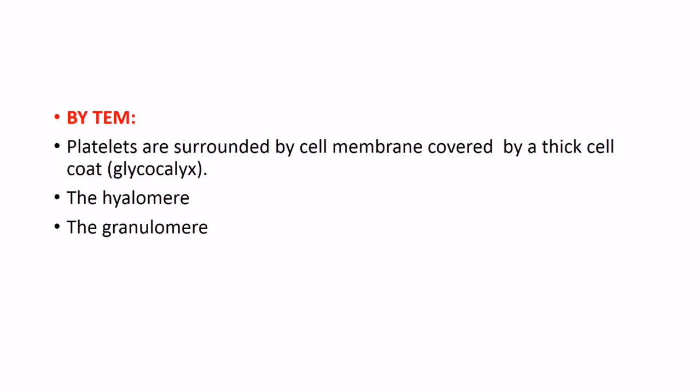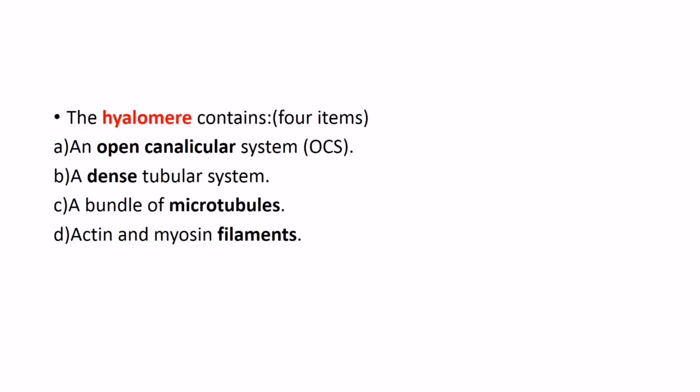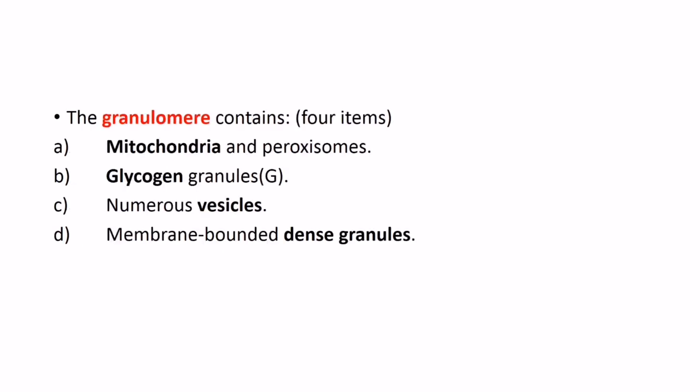By transmission electron microscope, platelets are surrounded by a cell membrane covered by a thick cell coat called glycocalyx. The platelet consists of the hyalomere and the granulomere. The hyalomere consists of four components: an open canalicular system, a dense tubular system, a bundle of microtubules, and actin and myosin filaments. The granulomere contains mitochondria, peroxisomes, glycogen granules, and numerous vesicles.